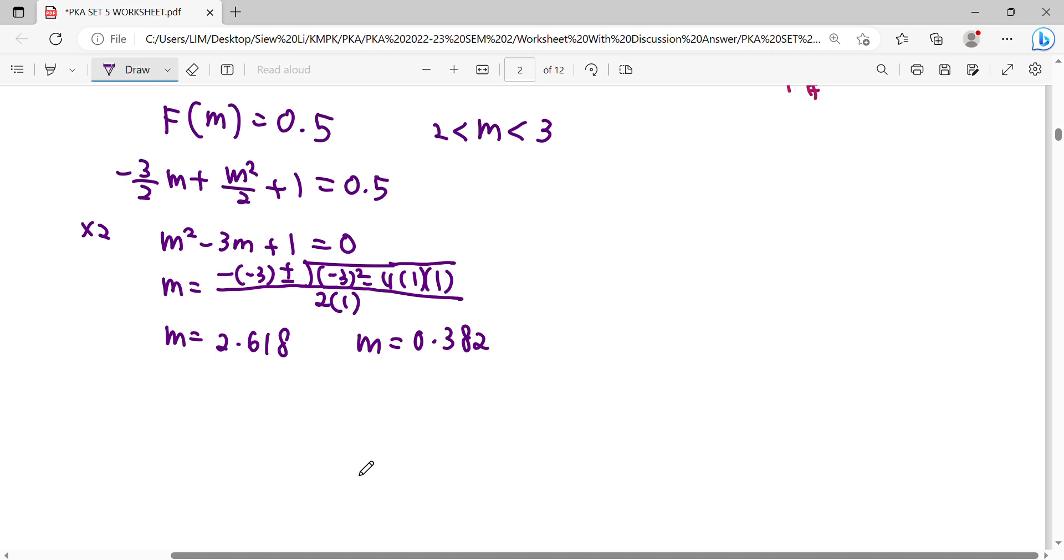So this is not our final answer yet. As far as I said, median. Median, median, 4 in between 2 and 3. So the value M can be accepted is only 2.613. So this is rejected.